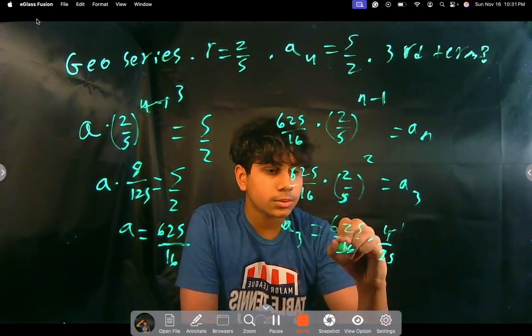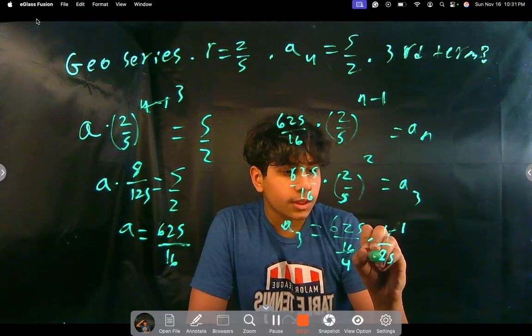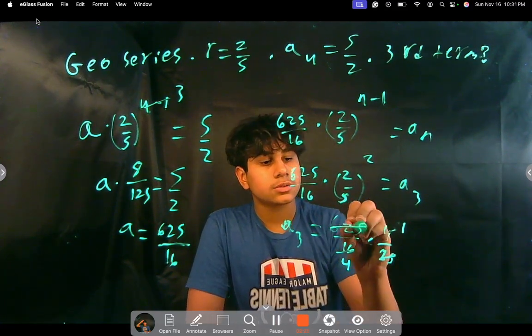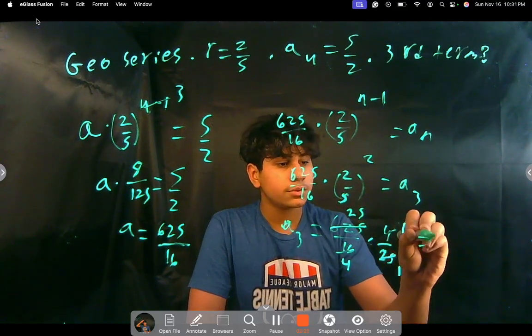So a₃ equals 625 over 16 times 4 over 25. Now we can simplify this. So it'll become 1, this will become a 4, and then this 25 squared is 625, so it'll become 1, this will become 25, so the answer is 25 over 4.